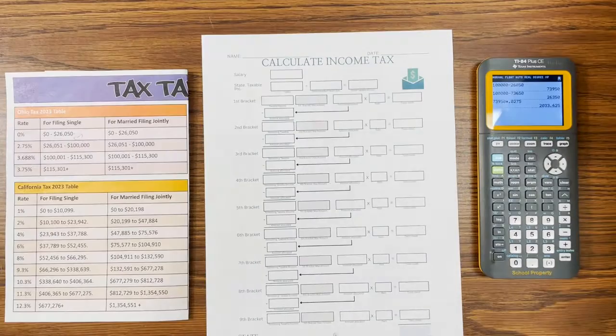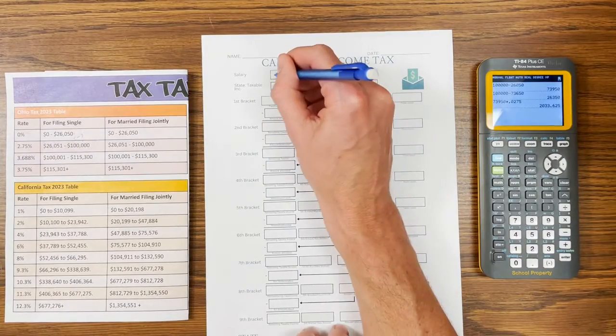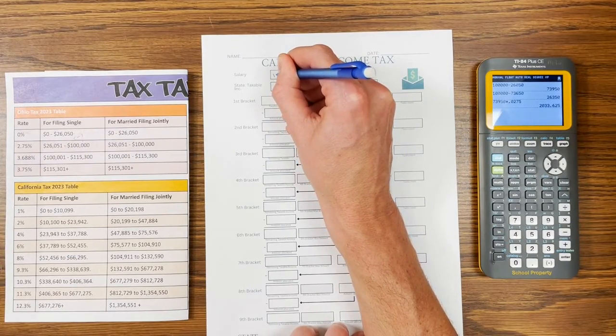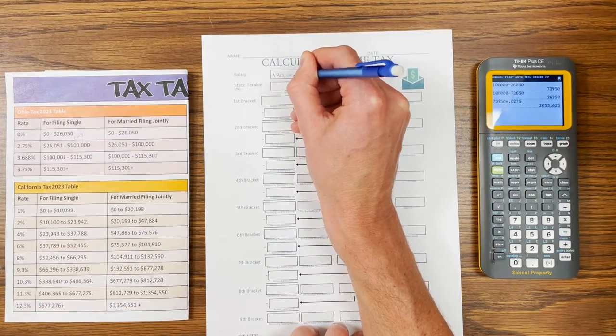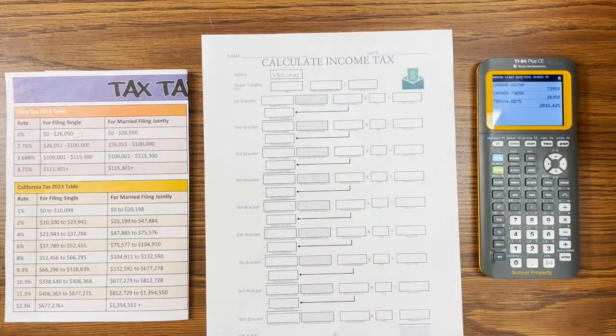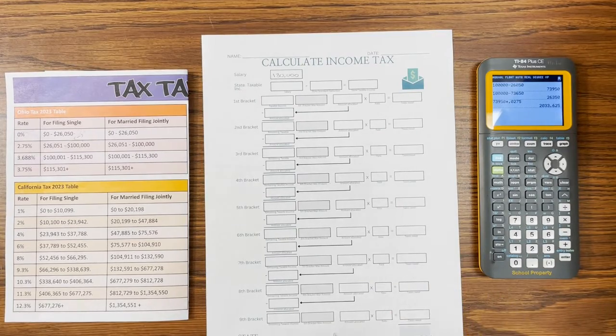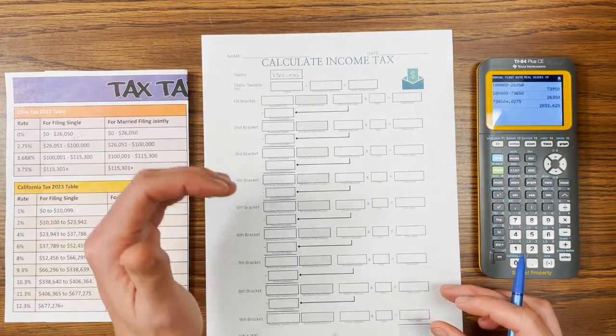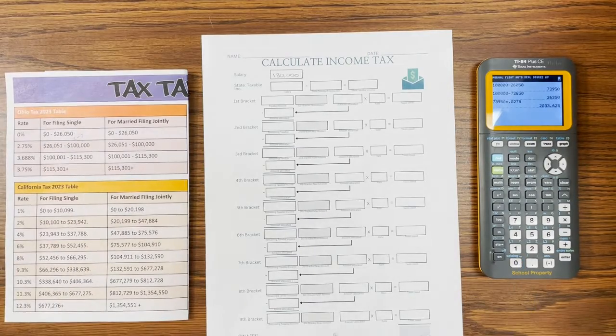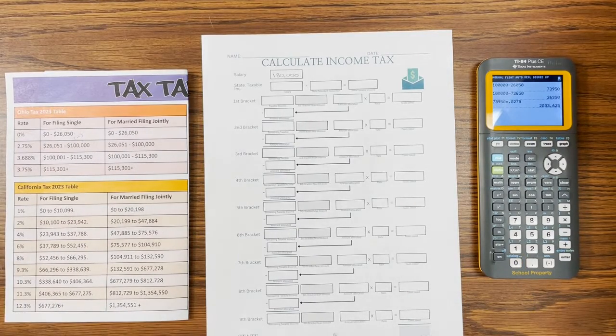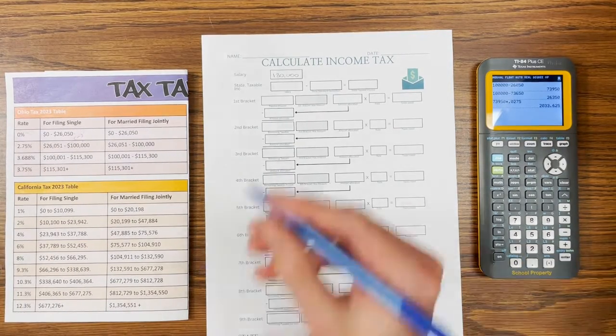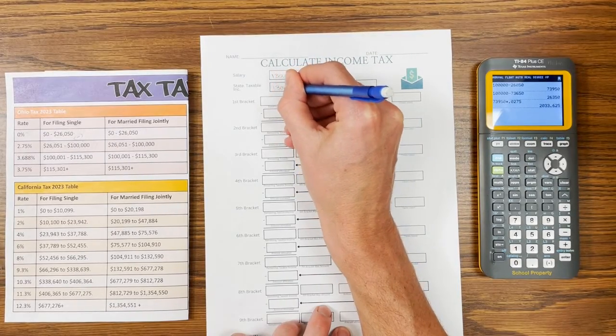Alright, so let's get started. For the purposes of this video, I'm just going to do a salary of $130,000. Not because that's an average salary for Americans or people living in Ohio, but it gives me a good number for going through a couple of brackets. I'm aiming to go through a couple of these brackets with you to show you how it works and what it looks like.